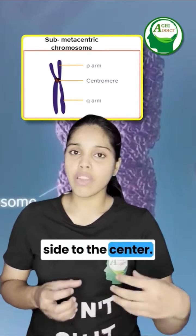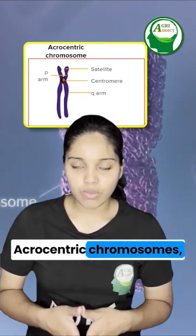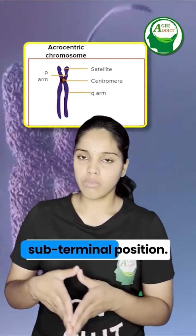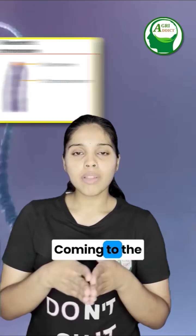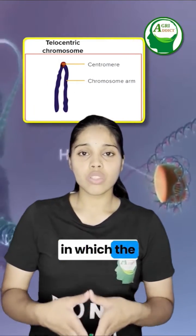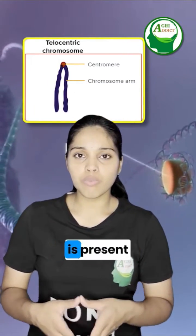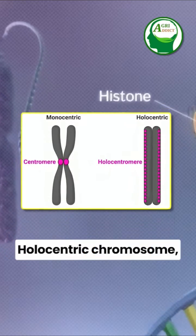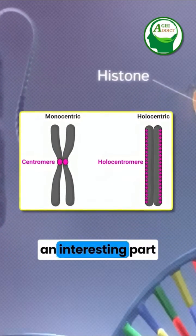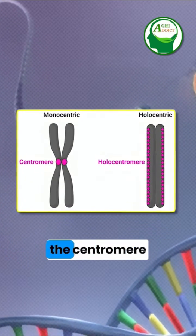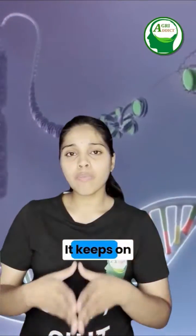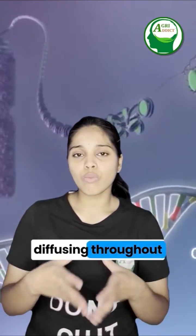In acrocentric chromosomes, the centromere is present at the subterminal position. In telocentric chromosomes, the centromere is present exactly at the terminal position. Holocentric chromosomes are an interesting case in which the centromere does not have a fixed position at all — it keeps diffusing throughout the chromosome.